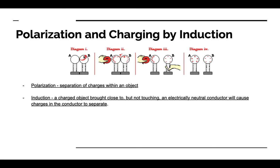In diagram one, conductors A and B are in contact, together making one whole conductor. When a negatively charged balloon is brought close to A and B, all the electrons on A are repelled by the electrostatic force and flee into conductor B. This leaves A with a net positive charge and B with a net negative charge. However, the overall net charge when combining A and B is still zero, because charge is conserved.